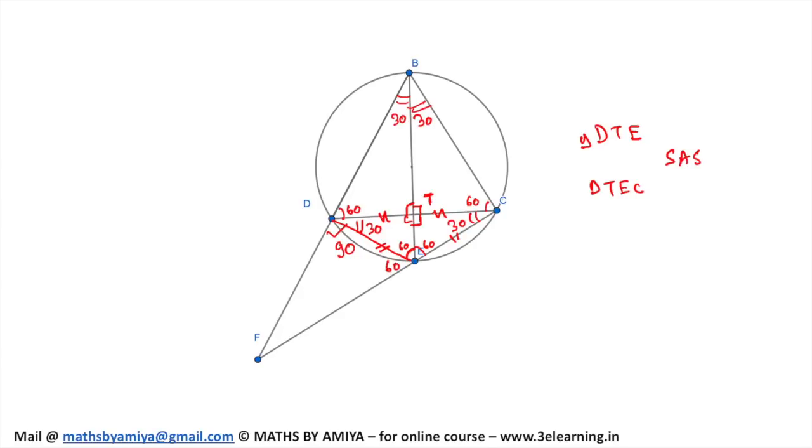So in triangle DEF, we have 90 and 60, so this will be 30. We've done all the construction angle-wise.